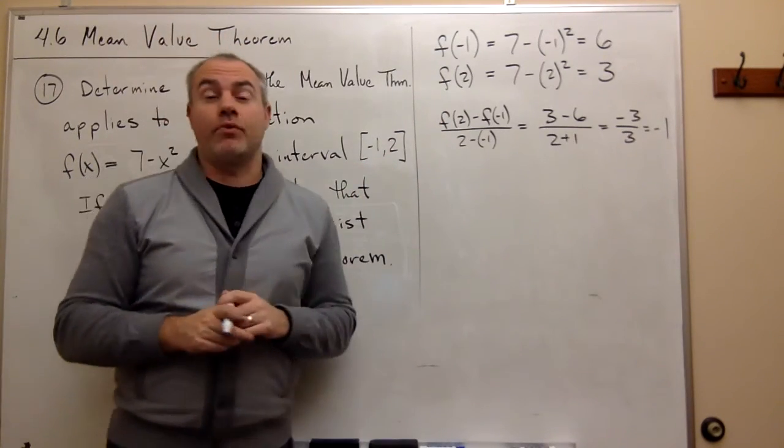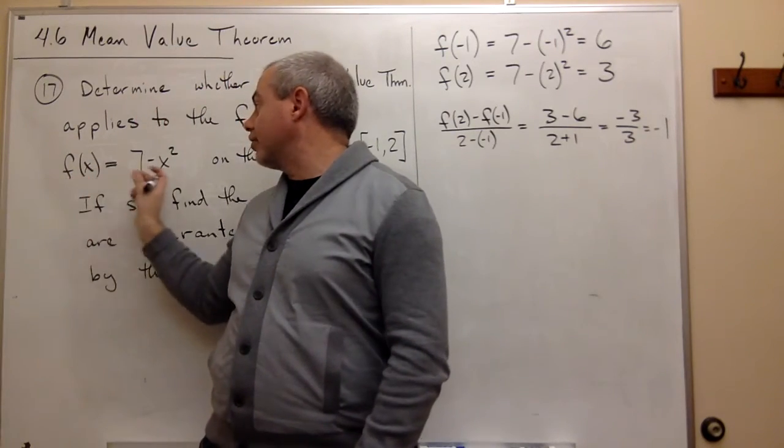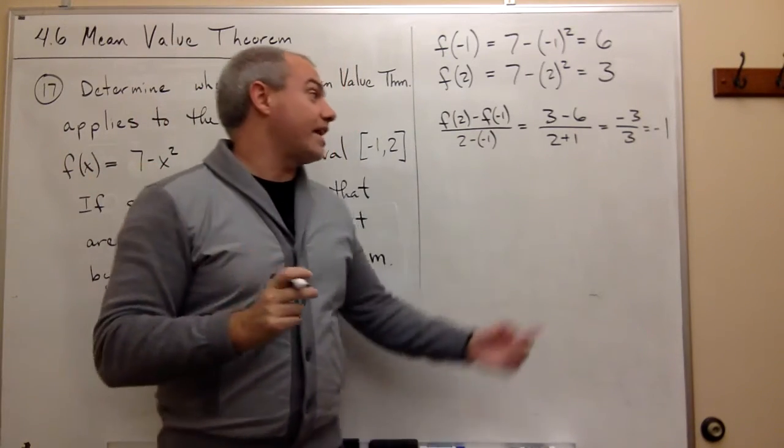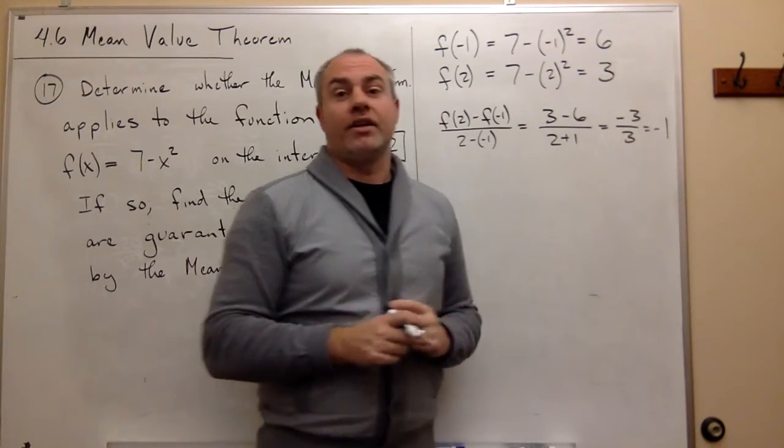So let's find that point. So how I'm going to do that is I'm just going to take the derivative of this function, set it equal to negative 1, and solve for x.